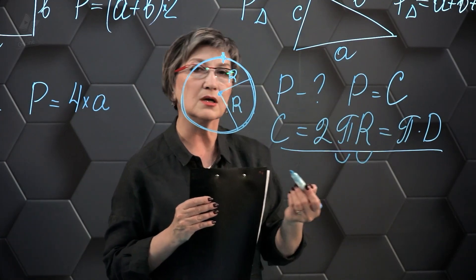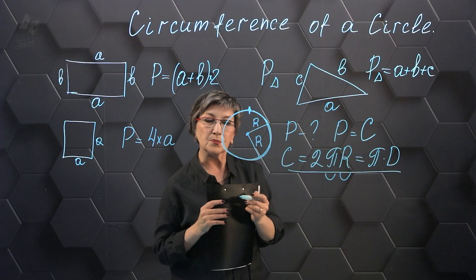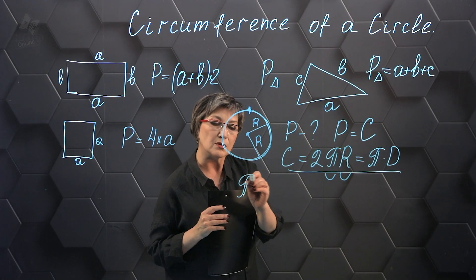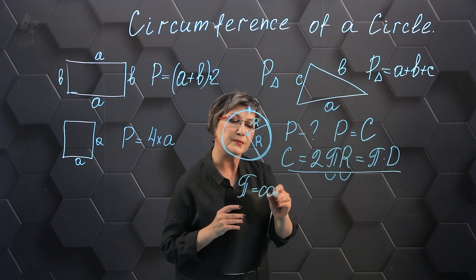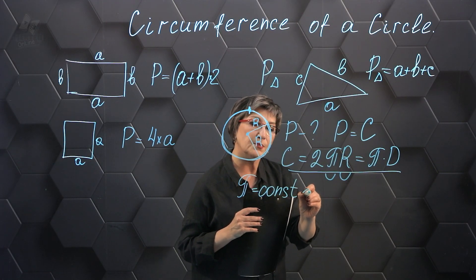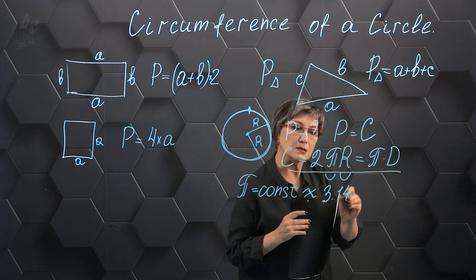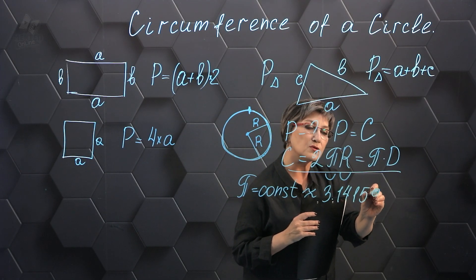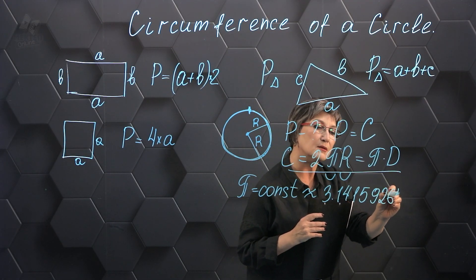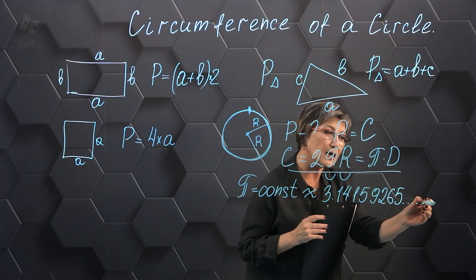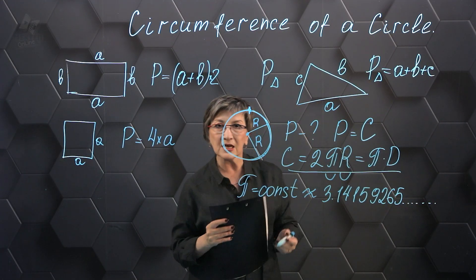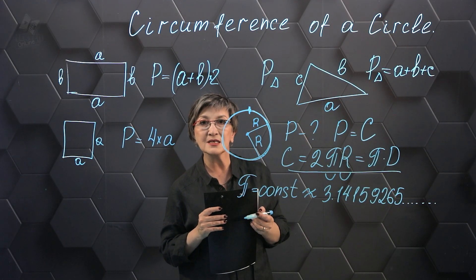But what is the number π? Pi is a constant number. And this number is approximately 3.1415926 and so on. It's an infinite non-periodic decimal. And that's why it's very common for answers to write this number π without multiplying by this huge number.